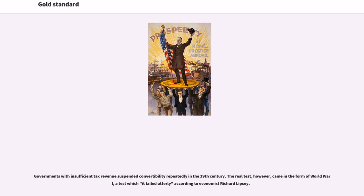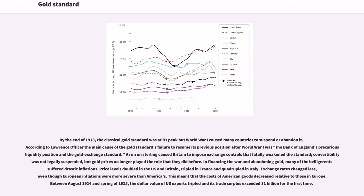Governments with insufficient tax revenue suspended convertibility repeatedly in the 19th century. The real test came in the form of World War I, a test which had failed utterly according to economist Richard Lipsey. By the end of 1913, the classical gold standard was at its peak, but World War I caused many countries to suspend or abandon it. According to Lawrence Officer, the main cause of the gold standard's failure to resume after WWI was the Bank of England's precarious liquidity position and the gold exchange standard. A run on sterling caused Britain to impose exchange controls that fatally weakened the standard.